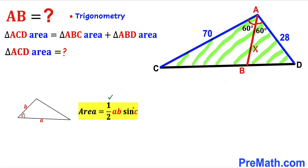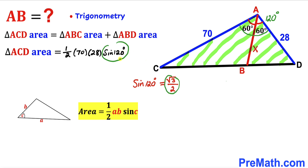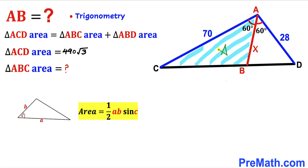Let's focus on triangle ACD and calculate its area. Using the formula Area = ½ × A × B × sin(C), the side lengths are 70 and 28, and the angle between them is 60 + 60 = 120 degrees. So the area of triangle ACD = ½ × 70 × 28 × sin(120°). Since sin(120°) = √3/2, this simplifies to 490√3.